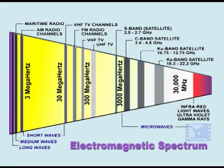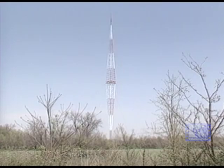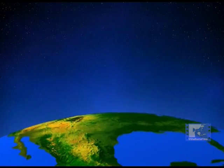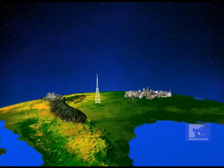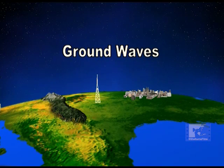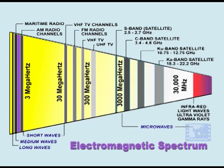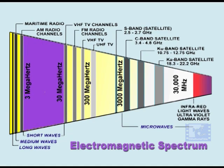Local AM radio stations use the medium wave frequencies from 500 to 1600 kilohertz because the wavelengths generated within this band propagate very well along the Earth's surface over considerable distances. By contrast, international radio stations use the short wave bands between 3 and 30 megahertz.